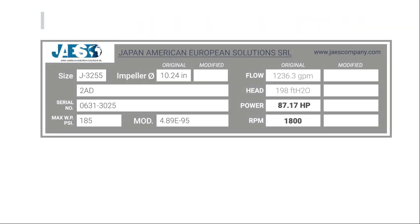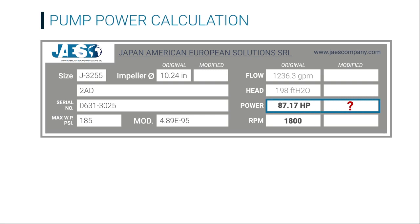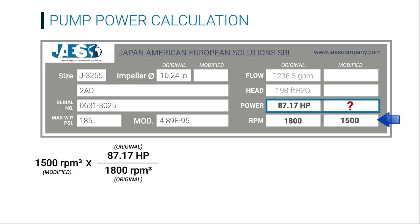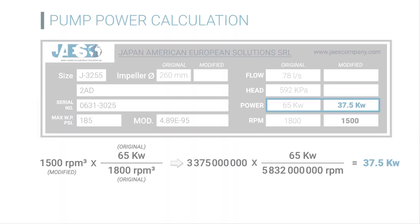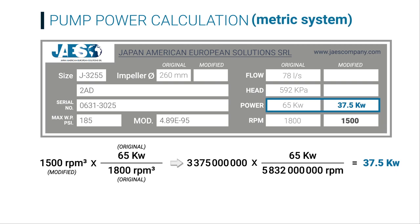The next step is to calculate the pump power. To calculate what is the new power if we change the RPM from 1800 to 1500, we have to cube the value of the modified RPM and multiply it by the original power value and the original RPM value, cubed as well. Make sure to cube the values of both the modified and original RPM. By multiplying these numbers, we can notice that the new power will come down to 54.3 hp, compared to the initial 87.17 hp. Using the metric system, the pump power values are in kW and the result is 37.5 kW.